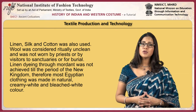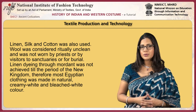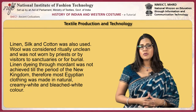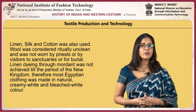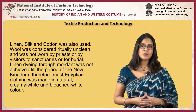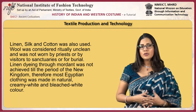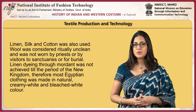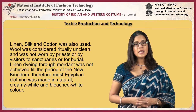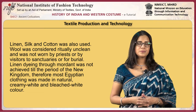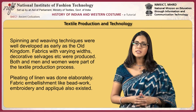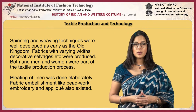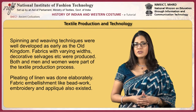Linen was used predominantly. Silk and cotton were also used. Wool was considered ritually unclean and was not worn by priests or by visitors to sanctuaries or for burial, though it was used as an outer garment. Linen dyeing through mordant was not achieved until the New Kingdom; therefore most Egyptian clothing was made in natural creamy white and bleached white color. Spinning and weaving techniques were well developed as early as the Old Kingdom. Fabrics with varying widths, decorative selvedges, etc. were produced.